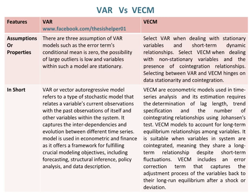VECM are econometric models used in time series analysis, and their estimation requires the determination of lag length, trend specification, and the number of co-integrating relationships using Johansson's test. VECM models account for long-term equilibrium relationships among variables. They are suitable when variables in the system are co-integrated, meaning they share a long-term relationship despite short-term fluctuations. VECM includes an error correction term that captures the adjustment process of the variables back to their long-run equilibrium after a shock or deviation.